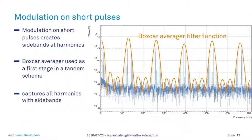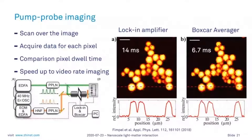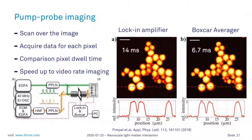To show an example where the boxcar averager is used: in typical pump-probe imaging with a confocal microscope, data is acquired for every pixel across the entire scanned image. In this work, images were recorded for the same signal-to-noise ratio and the pixel dwell time was compared. The boxcar was able to improve measurement time by more than a factor of two — very important for achieving fast video rates or saving precious measurement time.